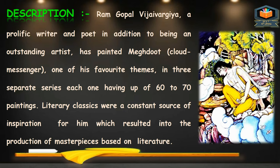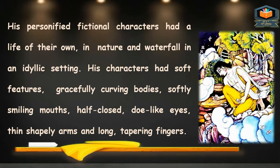He made paintings in three series, and this was one of his favorite themes, with each series containing 60 to 70 paintings. His personified fictional characters had a life of their own in nature and waterfall in an idyllic setting. His characters had soft features, gracefully curving bodies, softly smiling mouths, half-closed doe-like eyes, thin shapely arms, and long tapering fingers — this is the specialty of the characters painted by him.